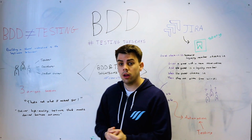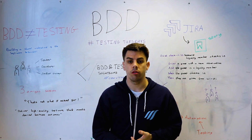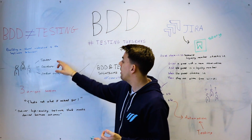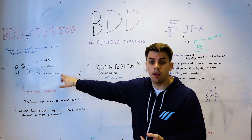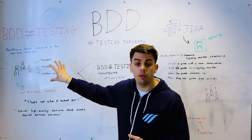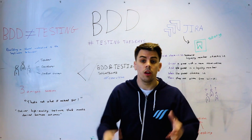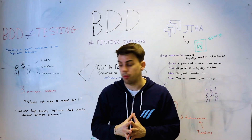Generally you have what you call your three amigo sessions — that's your tester, your developer, and your product owner. These are generally the three areas of the development team, and you're going to sit down and agree upon those behaviours.